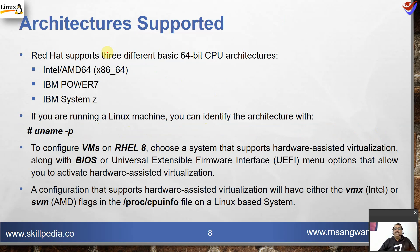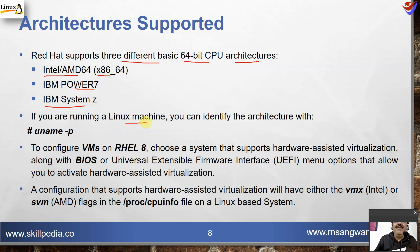The supported architectures for Red Hat Linux are three basic 64-bit CPU architectures: Intel/AMD 64-bit or x86-64, IBM POWER7, and IBM System Z. If you are running a Linux machine, you can check your architecture using the command: uname -p.